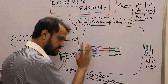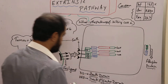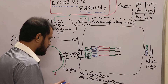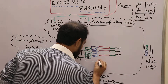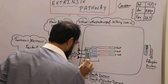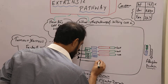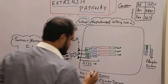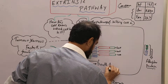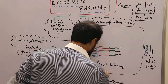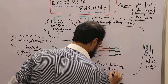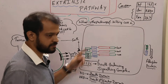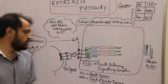This whole complex — that is the death domain, death effector domain, and FAS receptor together — is known as DISC, which stands for Death Inducing Signaling Complex. If DISC is produced or identified in a cell, that means the cell will surely undergo apoptosis.